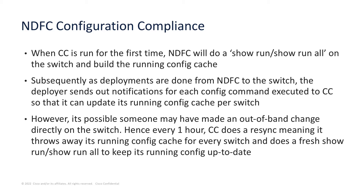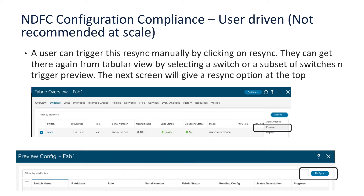It is possible that someone may make an out-of-band change directly on the switch, so every one hour configuration compliance does a resync — meaning it throws away its running config cache for every switch and does a fresh show run or show run all to keep its running config cache up to date. There's also a user-driven option to trigger config compliance, but this is not recommended at scale.